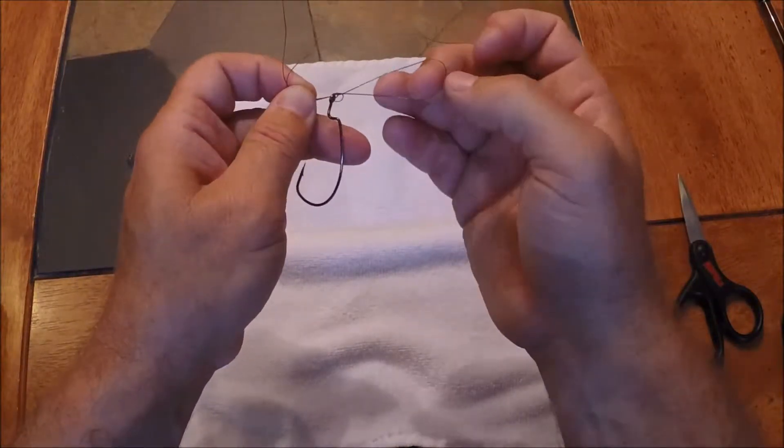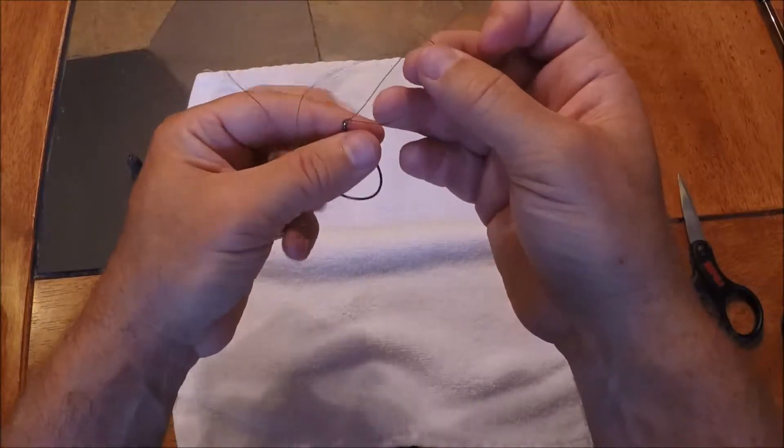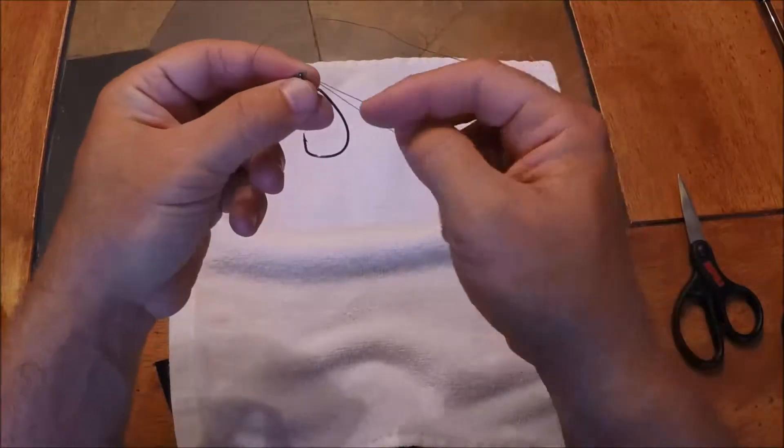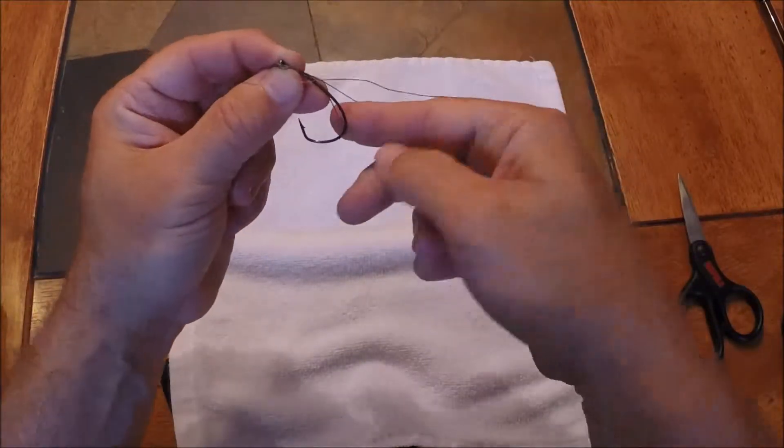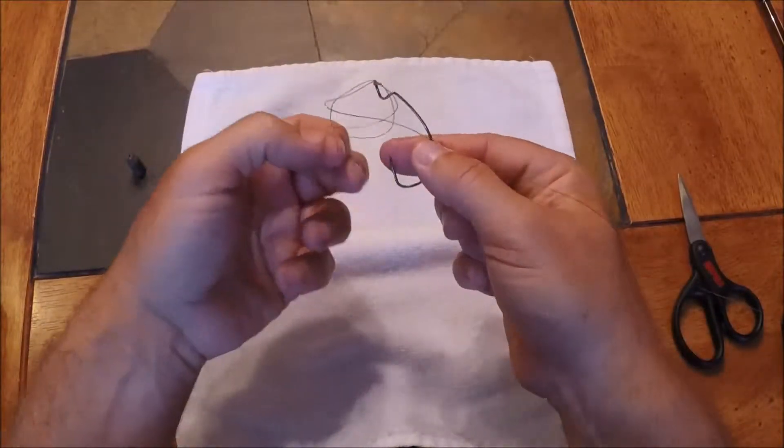Now what I've created is another loop. At this point, what really makes the Palomar knot work is I go back through the entire bait or hook in this case.